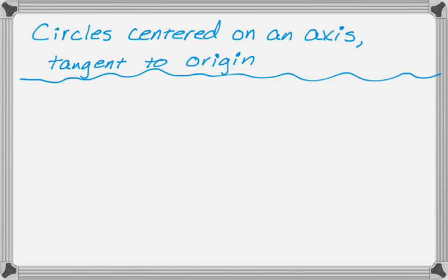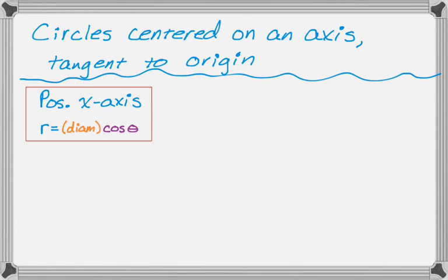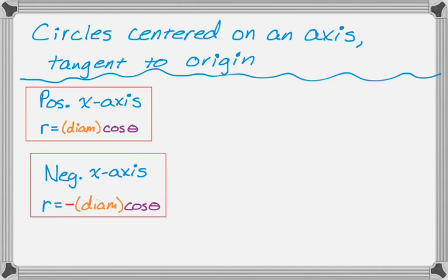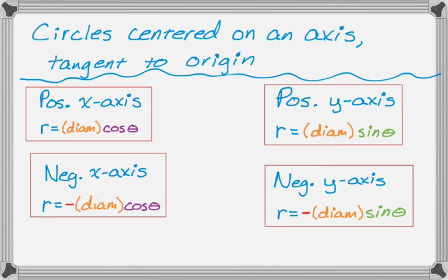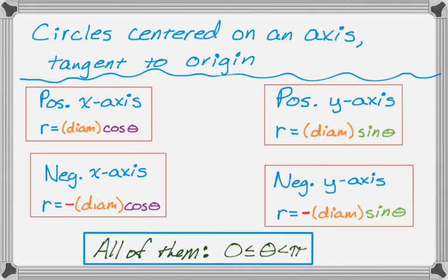To summarize: if centered on the positive x-axis, r equals diameter cosine theta; negative x-axis gives r equals negative diameter cosine theta; positive y-axis gives r equals diameter sine theta; negative y-axis gives r equals negative diameter sine theta. For every one of these, theta goes between 0 and pi.